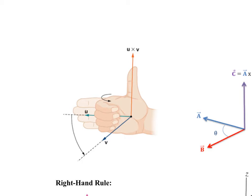Those of you that can spatially reason this out will be completely fine. Those who can't will find it terribly difficult. If you were to take V cross U, line your hand so your fingers are in the direction of V and curl them towards U — you may need to turn your hand — you'll find that your thumb actually points in the exact opposite direction. It's important to be able to grasp this, but it's also really difficult, so it takes a little bit of time.